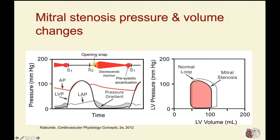We will have turbulence, and very rapidly we get a loud diastolic murmur. The intensity is greatest shortly after the valve opens, because that is where we have the greatest pressure gradient between the left atrium and the ventricle. Then, as the left ventricle fills with blood, the velocity of inflow decreases during the reduced filling phase and the murmur becomes less intense.